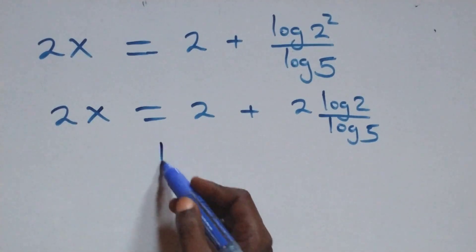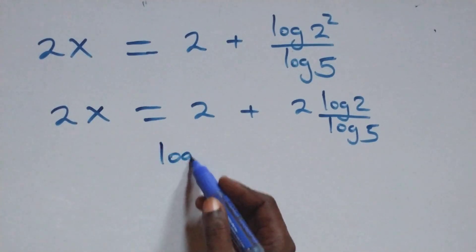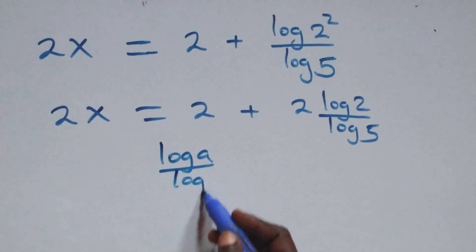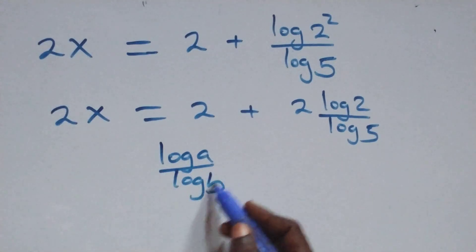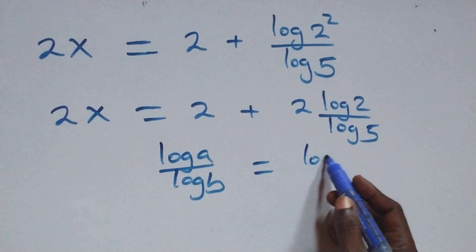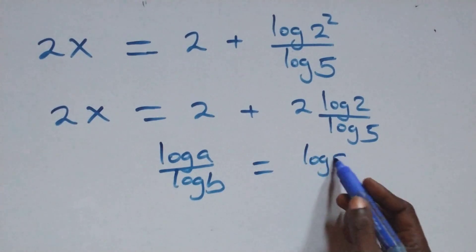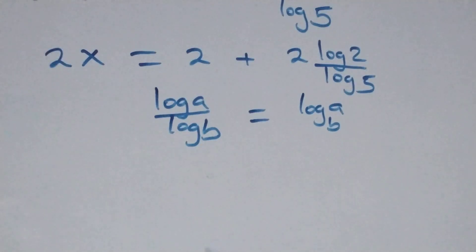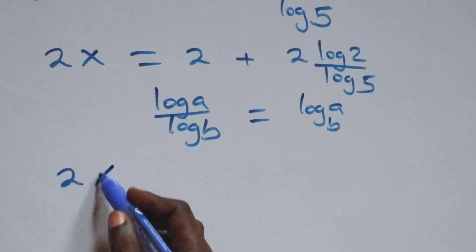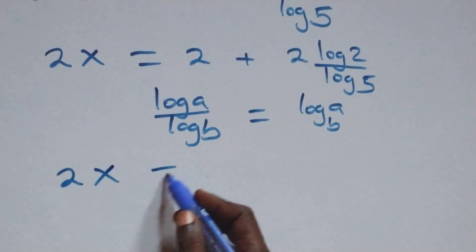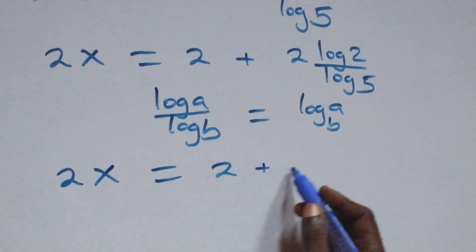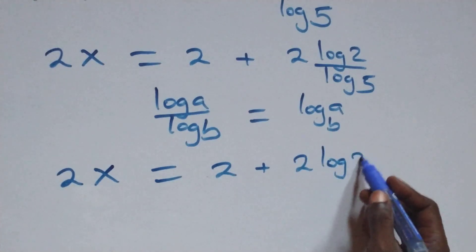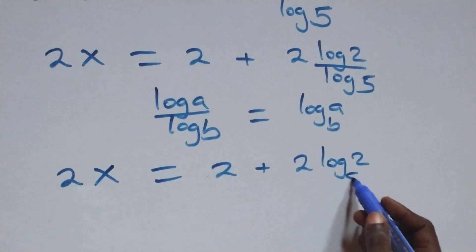Next step: we apply the change of base rule, where log A over log B is the same thing as log A to base B. All we have here becomes 2x equals 2 plus 2 log 2 to base 5.